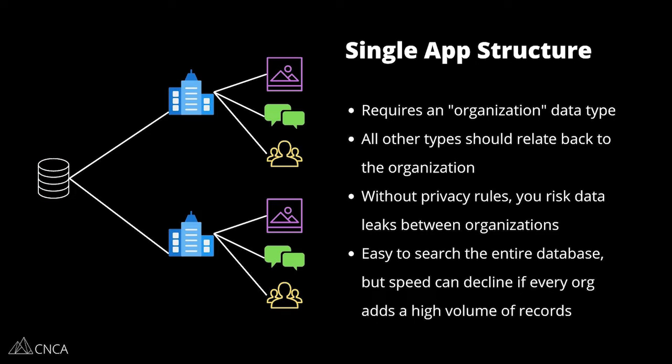Let's break these two paths down a little bit further, starting with a single-app structure. With a single app, you're working on one application — one database where everything is shared. It's up to you to create the right structure and rules to make sure that data is separated properly between your organizations, even though everybody is logging into the same app and technically accessing the same database. What you want to do here is create an organization data type. This is going to store all the top-level information about that organization — their name, branding, logos, colors, and any particular features that organization should have access to, such as for a subscription model. As long as all of the other data types in your database relate back to the organization, you have everything you need to lock things down.